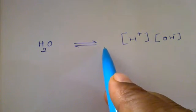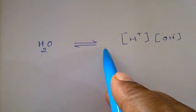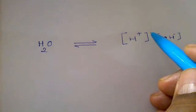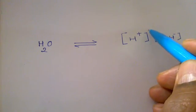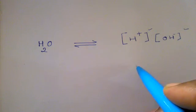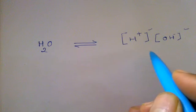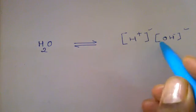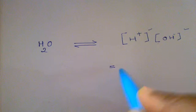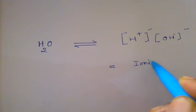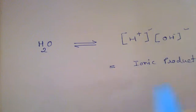So at any given time at a given temperature, we have a fixed proportion of H+ and OH-, and that's why the product of both of these things is known as ionic product of water.